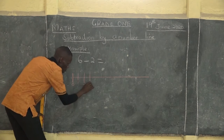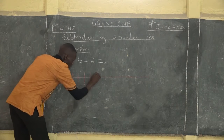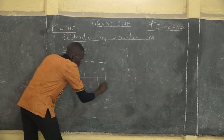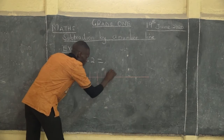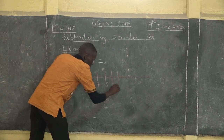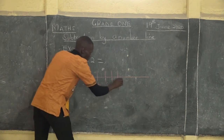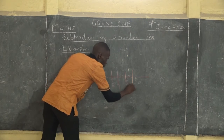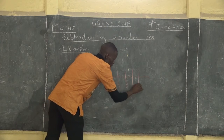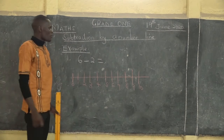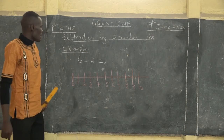Zero, one, two, three, four, five, six, seven, eight, nine, ten. So we can stop at ten.